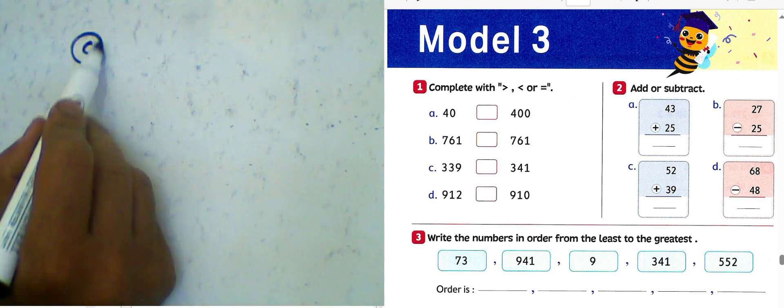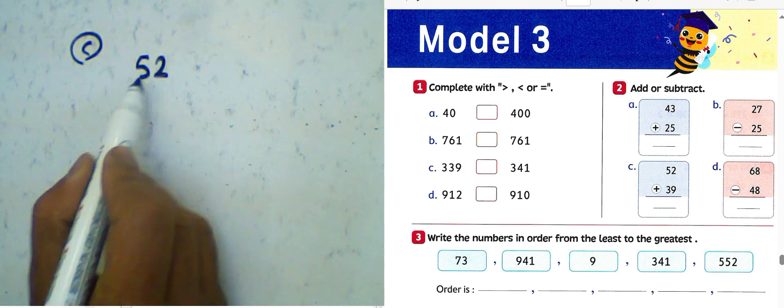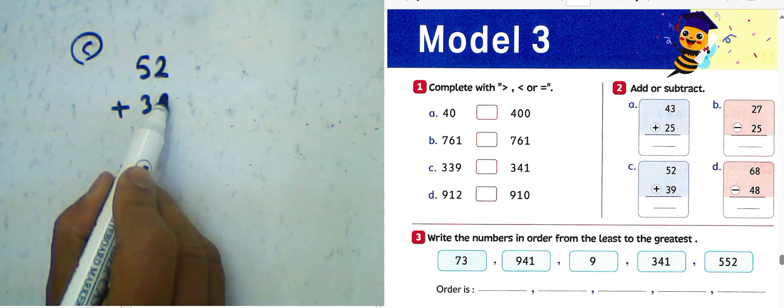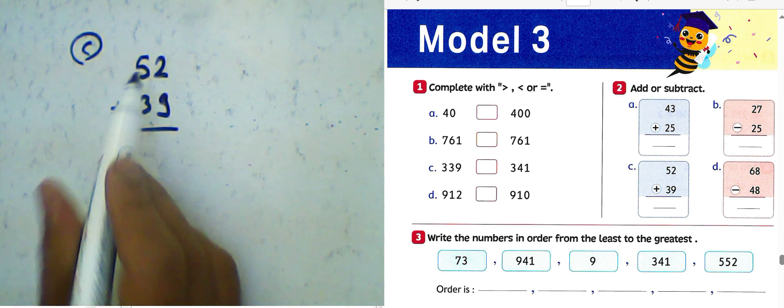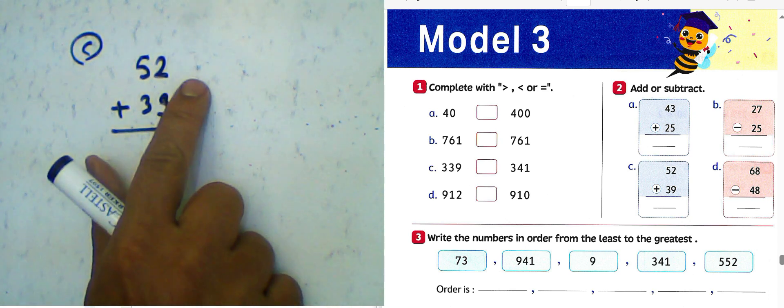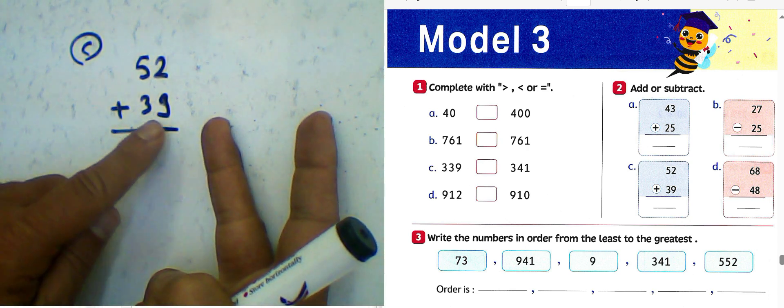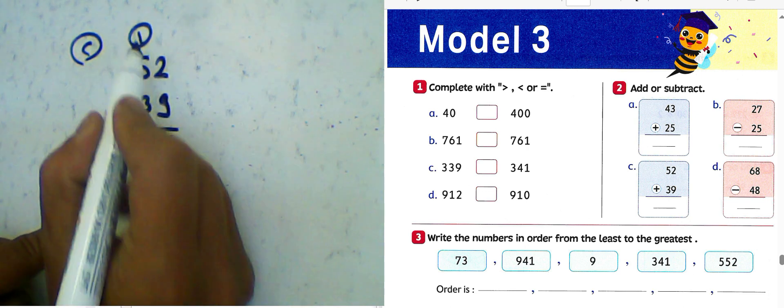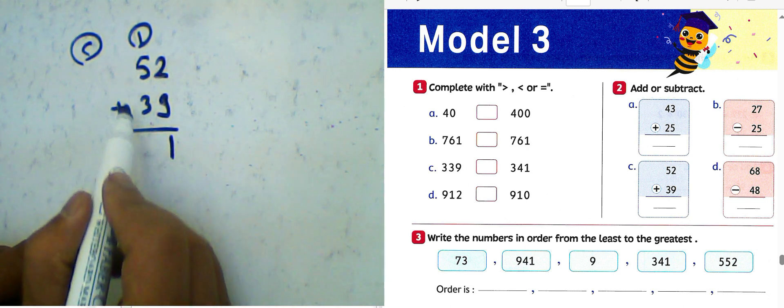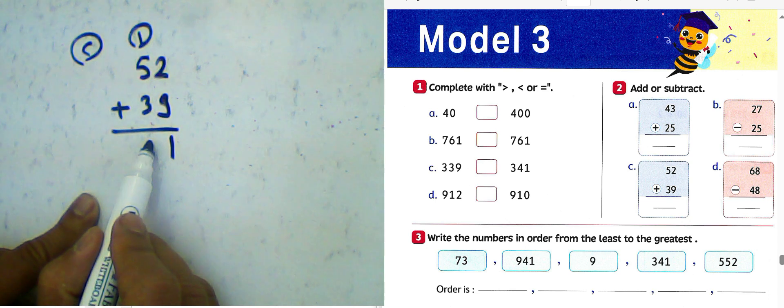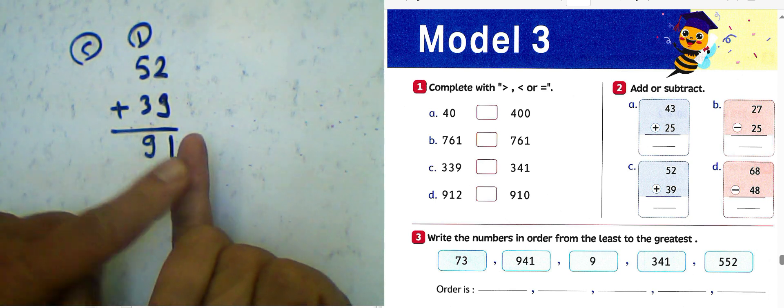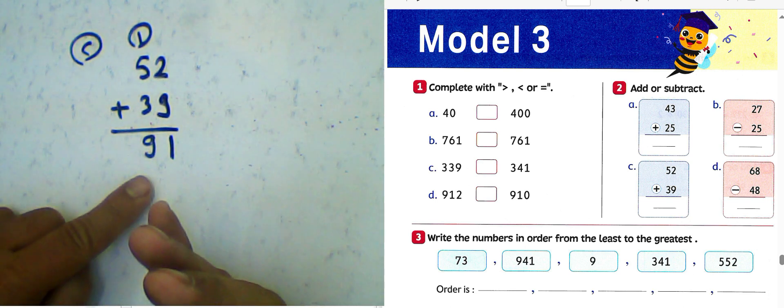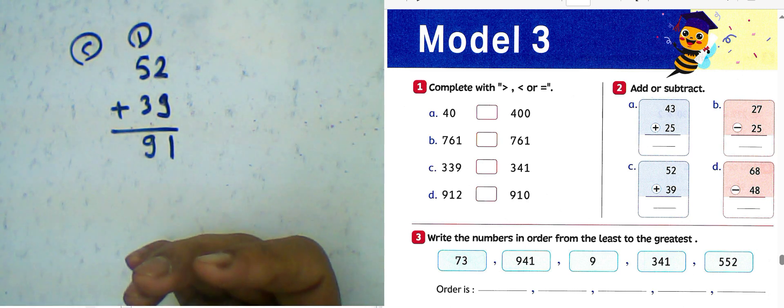Letter C: 52 plus 39. 9 plus 2, put 9 in your head and 2 in fingers. Just after 9, 10, 11. Write 1 and carry up 1. 5 plus 1, 6. 6 plus 3, it will be 9. Just after 6, 7, 8, 9. The result will be 91.